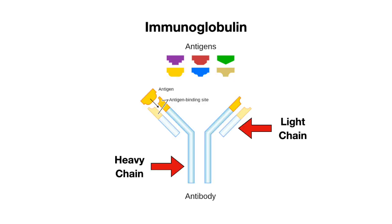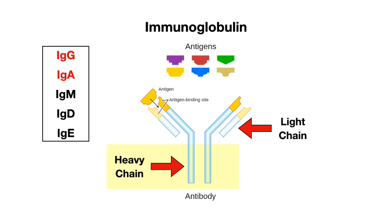Let's now talk about the structure of an immunoglobulin. An immunoglobulin or antibody consists of a light chain as well as a heavy chain. The heavy chain is what defines the class of immunoglobulin, of which there are five: IgG, IgA, IgM, IgD, and IgE.